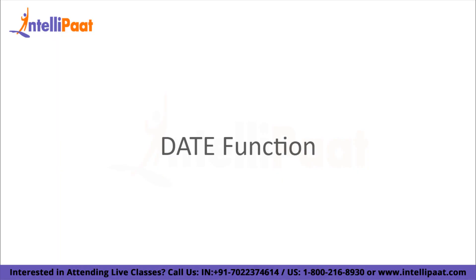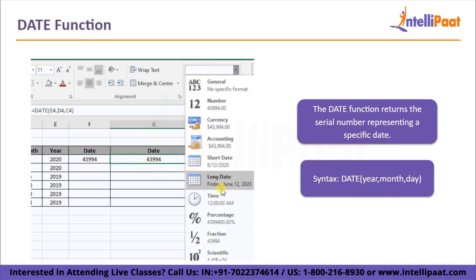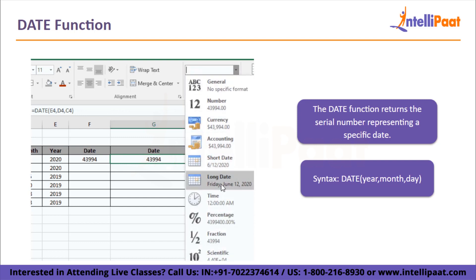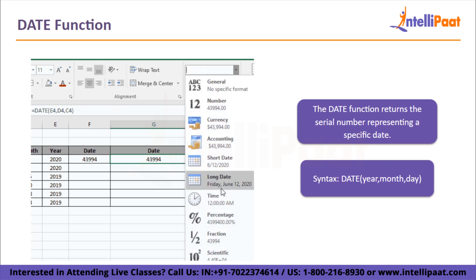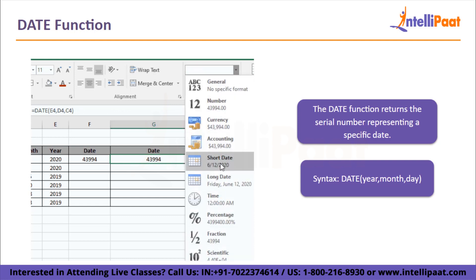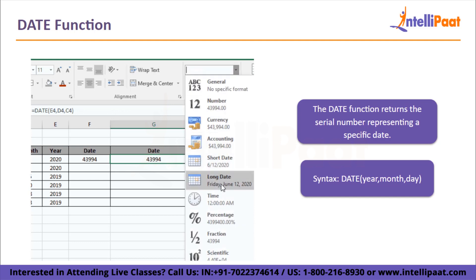We'll start with our first function, the DATE function. The DATE function returns the serial number representing a specific date. The syntax is: DATE(year, month, day). The year argument's value may be 1 to 4 digits. For month, it's a positive or negative integer from 1 to 12, representing January to December. For day, a number from 1 to 31, which can be positive or negative, representing the day of the month.